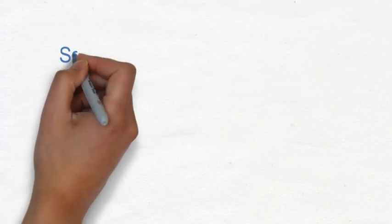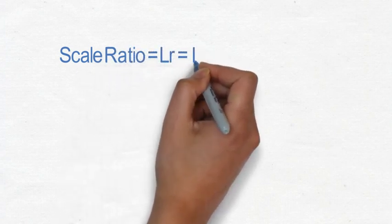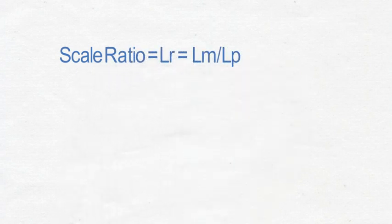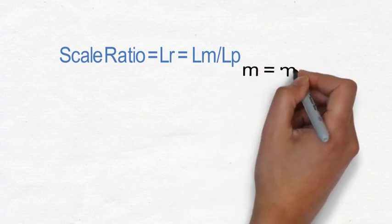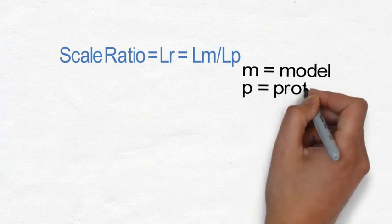Now let us see the term scale ratio LR. It is nothing but the ratio of the length of the model divided by length of the prototype. Here M stands for the model, P stands for the prototype.